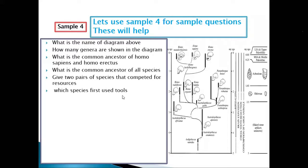Which species first used tools? In actual sense it is Homo habilis if talking about the Homo genus. But looking at the tool timeline on the diagram, the oldest tools align with Australopithecus africanus and Paranthropus — these two used tools at the same time and were the first.